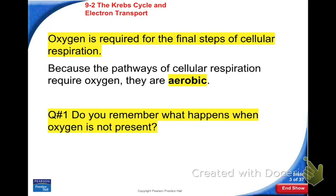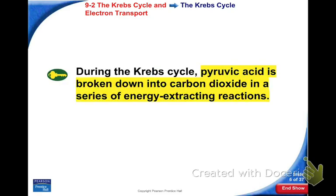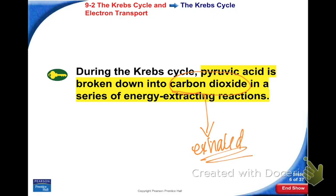Now we're looking at what happens if we have oxygen. If you have oxygen, the pyruvic acid goes into the Krebs cycle. During the Krebs cycle, pyruvic acid is broken down. The carbon dioxide that we exhale is a direct result of the Krebs cycle. Write this in your notes: the carbon dioxide that we exhale comes directly from the Krebs cycle.